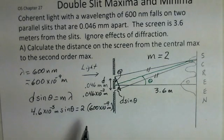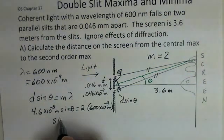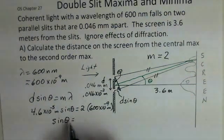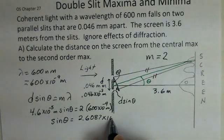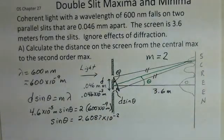We have a 2 for m, and we have 600 times 10 to the minus 9 for the wavelength. So you should pause and do this calculation. Go ahead and take inverse sine of the number that comes up, and then resume the video.